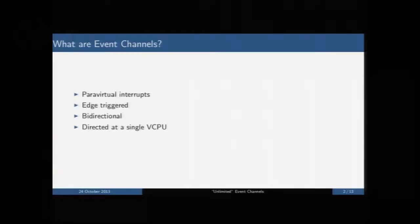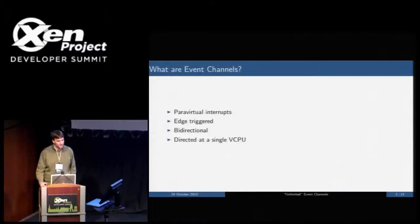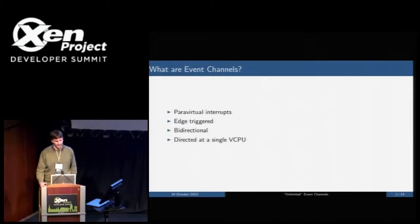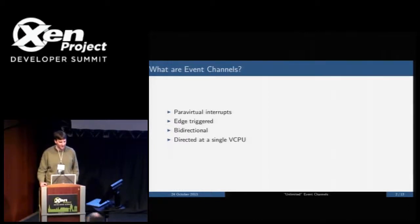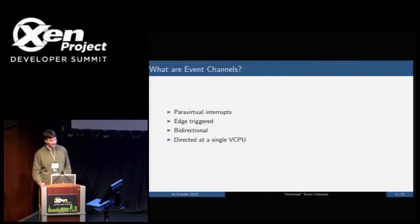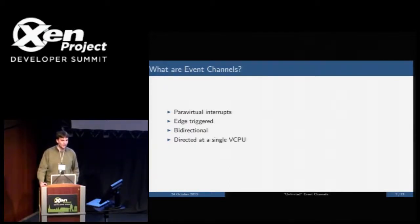So what are event channels? Event channels are Xen's method of doing paravirtualized interrupts. They're edge-triggered, they're bi-directional — if you set up an event channel between a front-end and a back-end, the front-end can signal the back-end and vice versa — and they're always directed at a single vCPU.